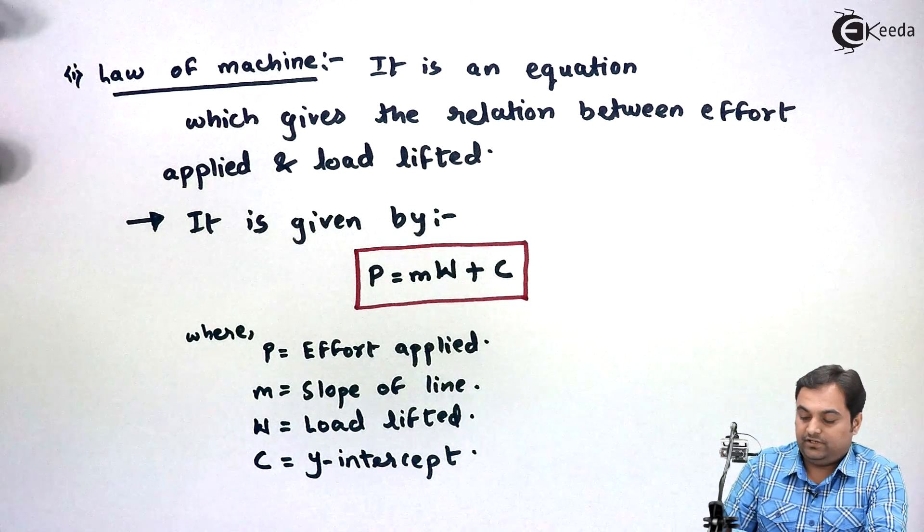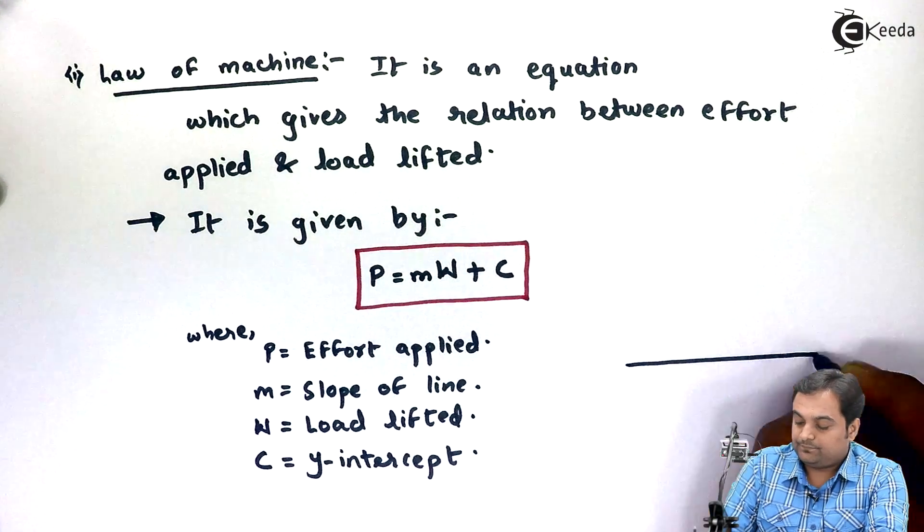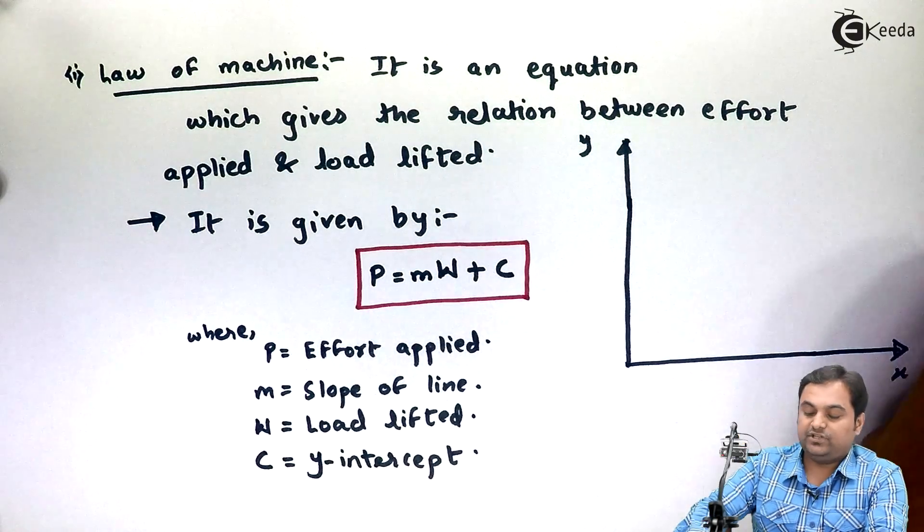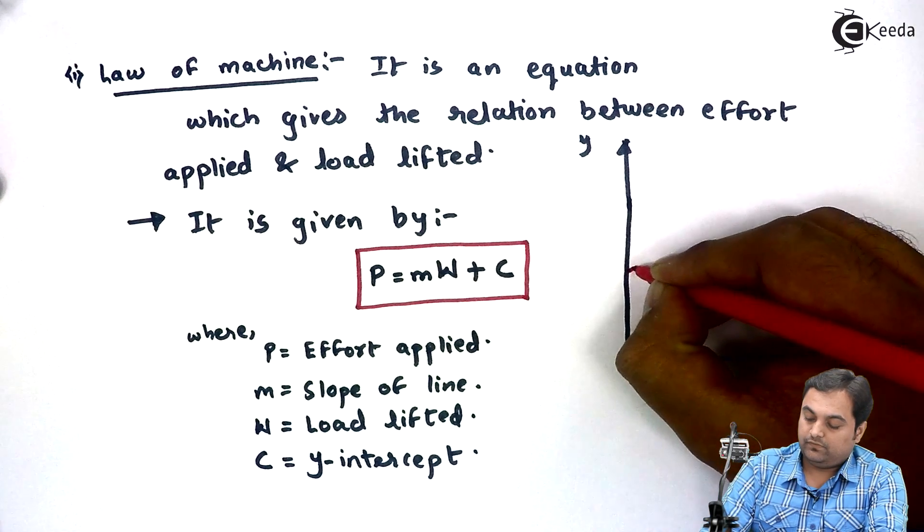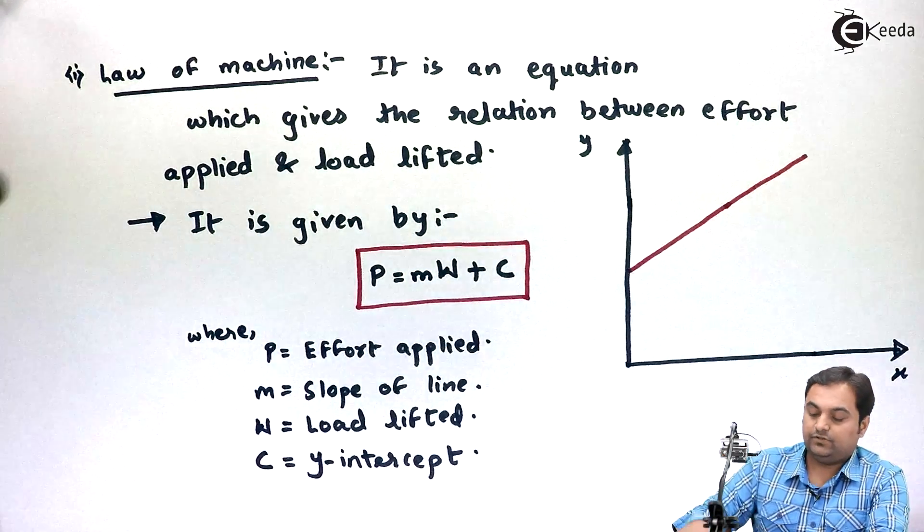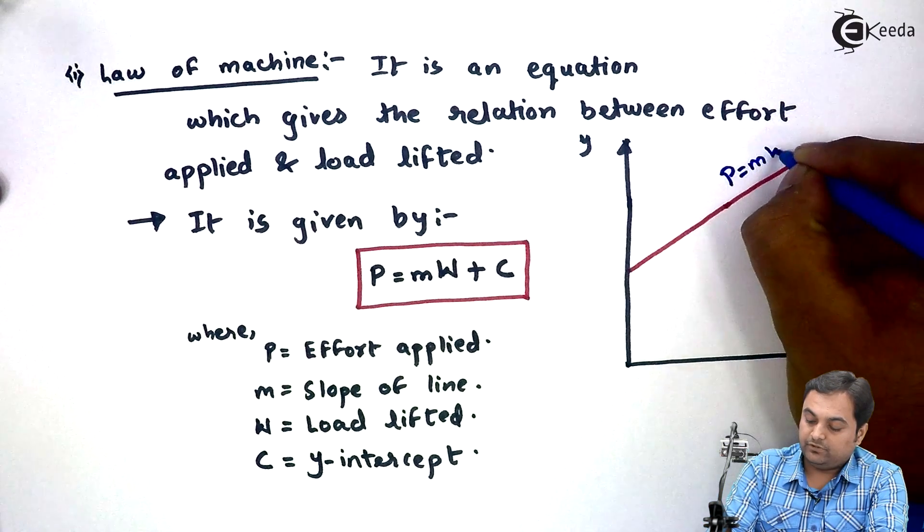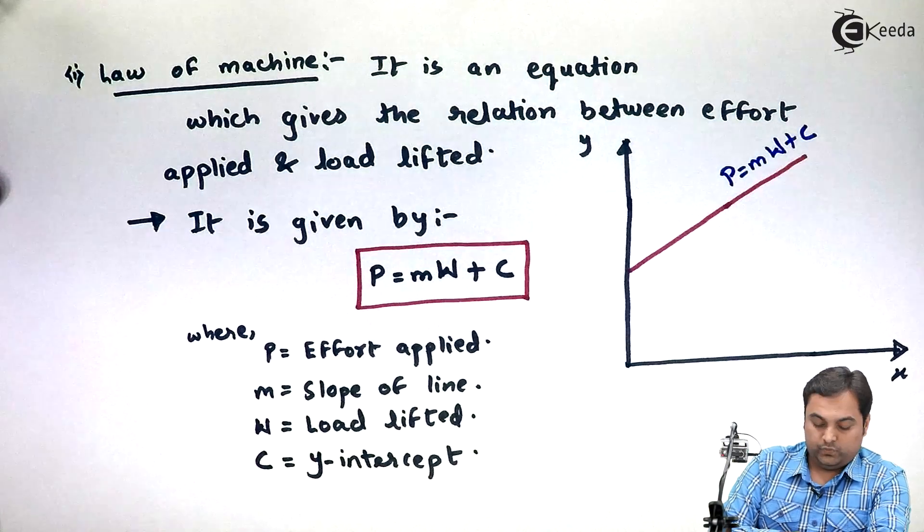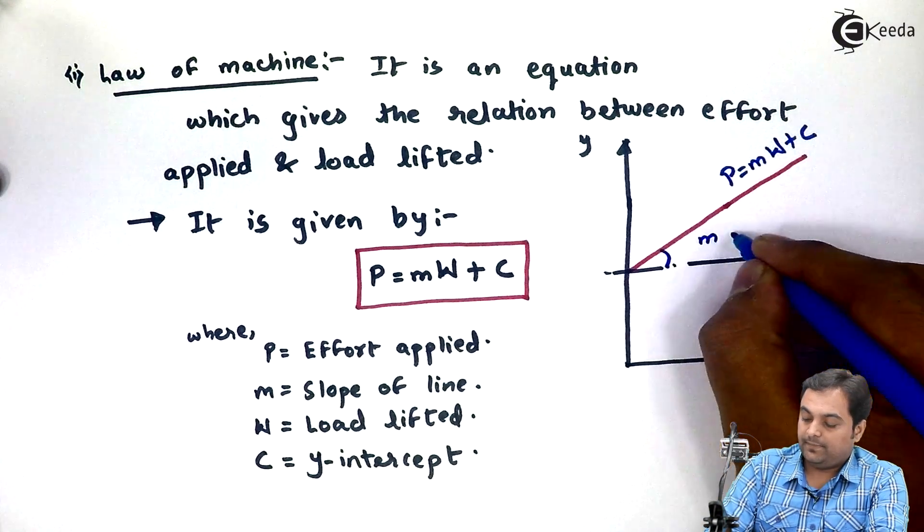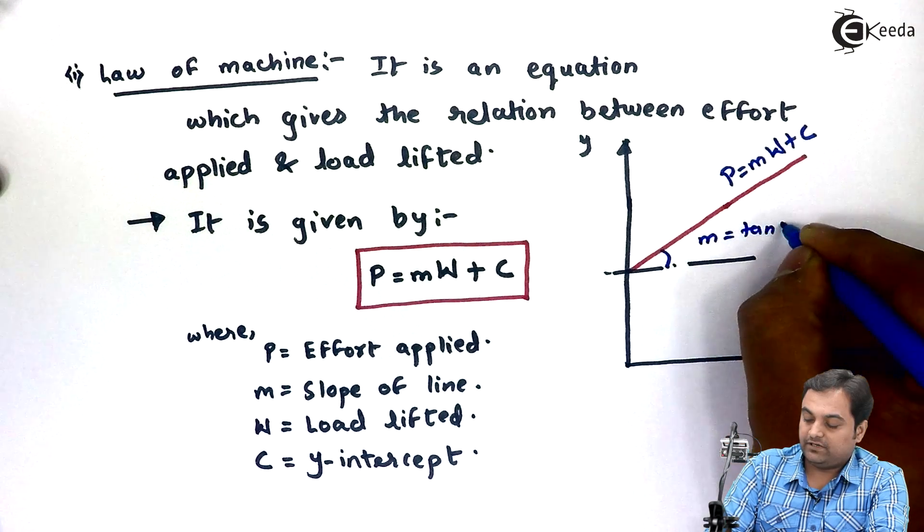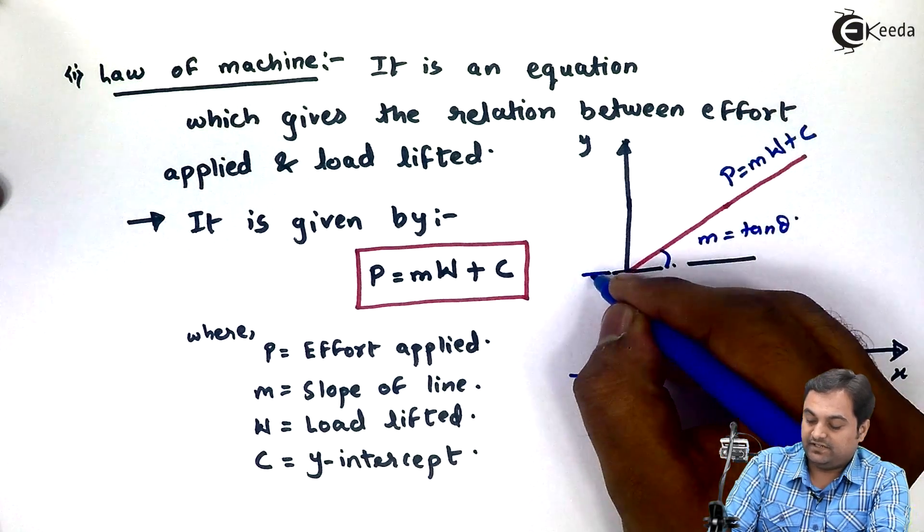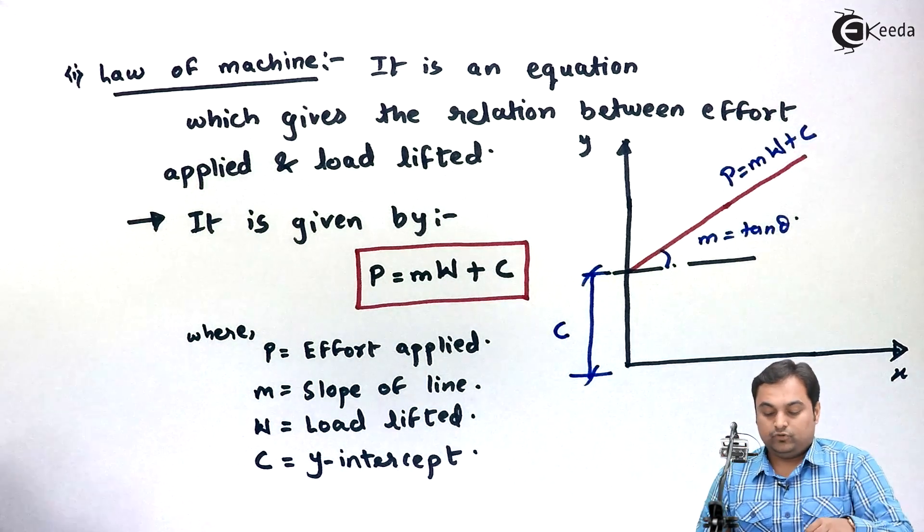So this law of machine can even be explained with the help of a diagram. Here we are having X and Y axis, and law of machine is nothing but expression for a straight line. This line represents the law of machine P equals M into W plus C, where M is the slope of the line here. We are having M as the slope of the line which is equal to tan of theta, and C is the Y intercept, that is where this line is cutting the Y axis.